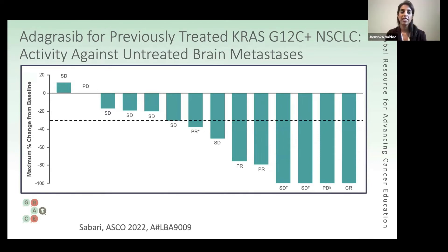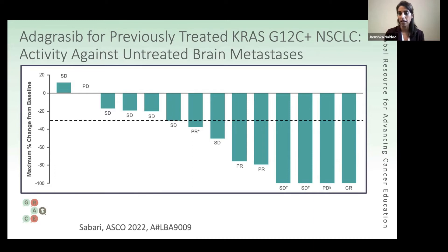It's gratifying to see the KRAS G12C floodgates open. This is a big problem in lung cancer — an aggressive subtype where patients may have done even more poorly than their counterparts for many years. There is certainly room in a field for more than one agent, and like we've seen with checkpoint inhibitors, some may suit certain groups better than others. Broadly, my take-home message is that in terms of response and tumor shrinkage, these data are very similar to sotorasib.